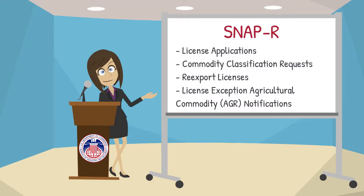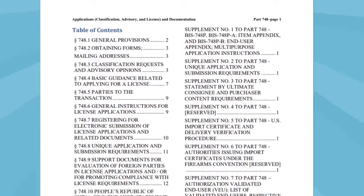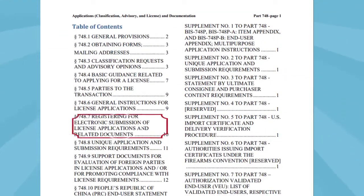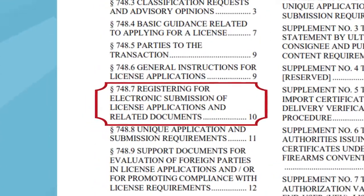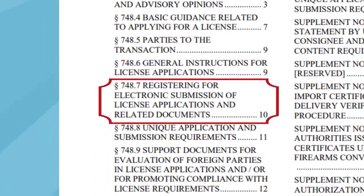Part 748 of the EAR Application Classification Advisory and License is shown on screen. Section 748.7 in the Table of Contents is outlined in red. Section 748.7 of the Export Administration Regulations provides instructions on how to register for a SNAP-R account.